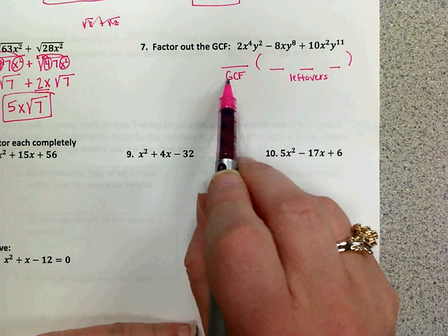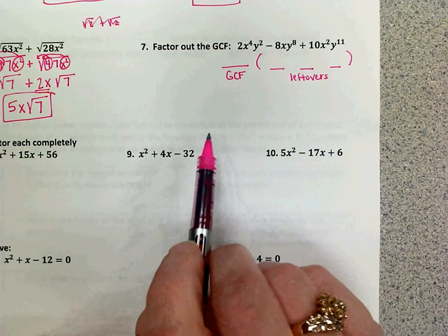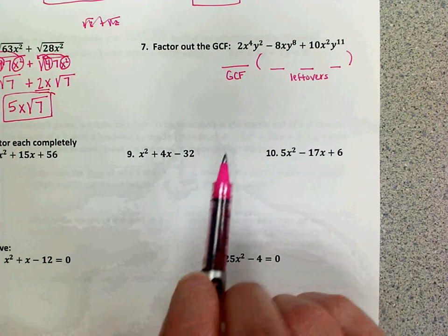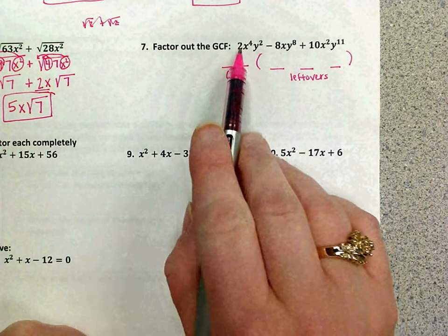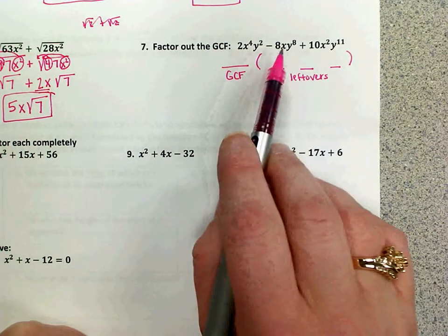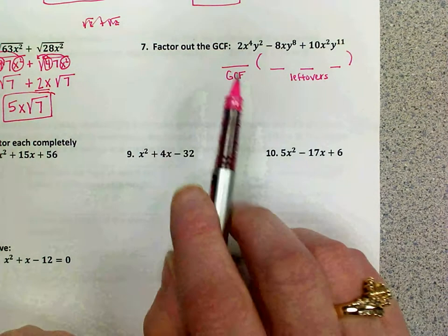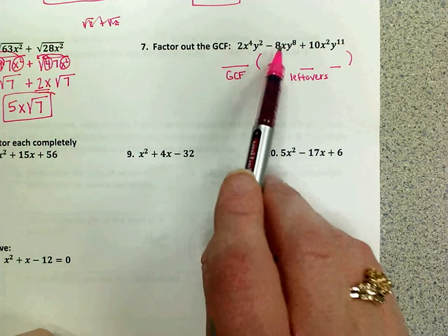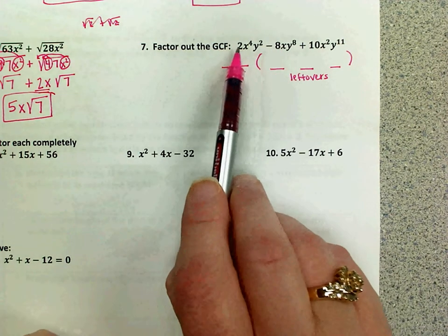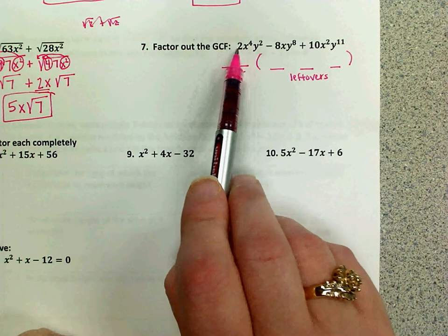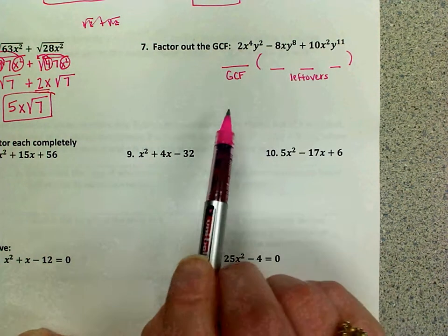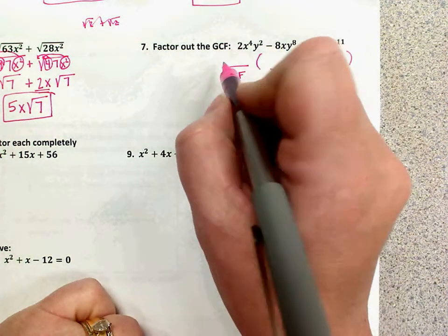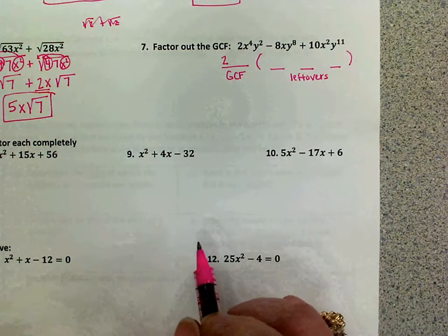So GCF means greatest common factor. You're wanting the largest number that's a factor, which means it divides into each one of your terms. Let's look at the numbers first. We have two, eight, and ten. The largest number that will divide into each one of those cannot be any bigger than your smallest term, so two is the biggest it can be. Two does divide into all three numbers. They're all even, so I know my GCF, the number part, will be a two.